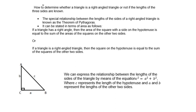How to determine whether a triangle is a right-angled triangle or not, if the lengths of the three sides are known. The special relationship between the lengths of the sides of a right-angled triangle is known as the theorem of Pythagoras. It can be stated in terms of area as follows: if a triangle is a right-angled triangle, then the area of the square with a side on the hypotenuse is equal to the sum of the areas of the squares on the other two sides. Or: if a triangle is a right-angled triangle, then the square on the hypotenuse is equal to the sum of the squares of the other two sides.